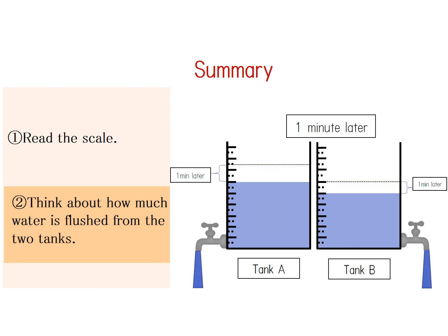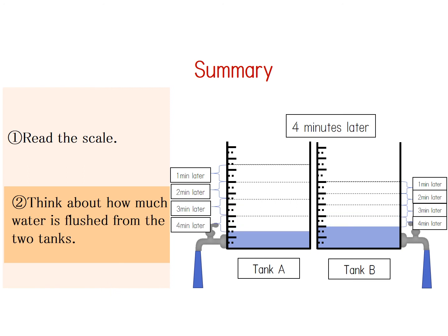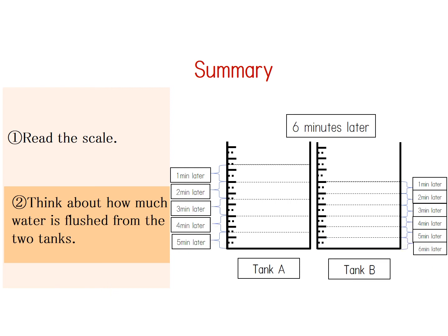1 minute later. 2 minutes. 3 minutes. 4 minutes. 5 minutes. 6 minutes. 1.5 units of scale of water are flushed from tank A and 1 unit of water is flushed from tank B every minute. That's all for today's lesson.